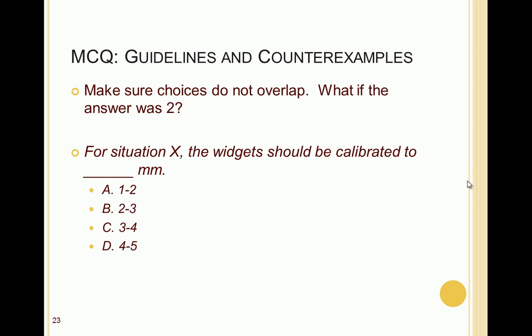Another point is to make sure that your choices do not overlap if you are using ranges. For example, 'For situation X, the widget should be calibrated to ___ millimeters: 1 to 2, 2 to 3, 3 to 4, or 4 to 5?' If the actual answer was 2, 3, or 4, it would be right on the borderline of two options. So if you're using ranges like this, make sure the choices do not overlap.